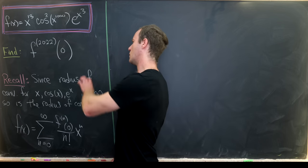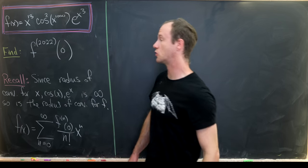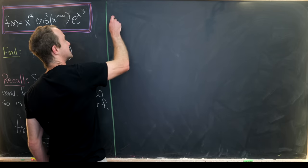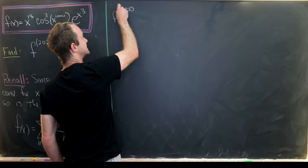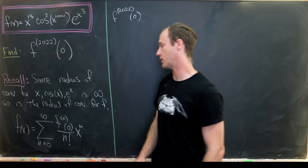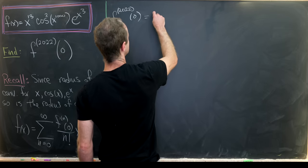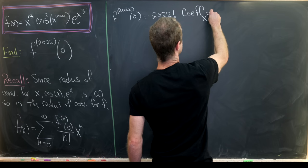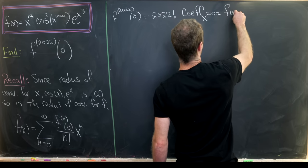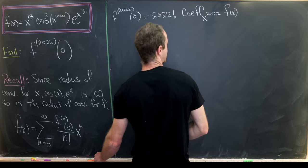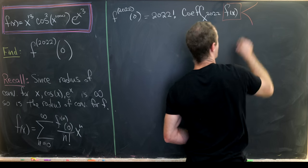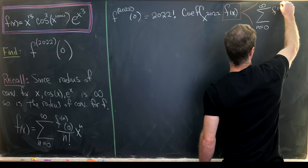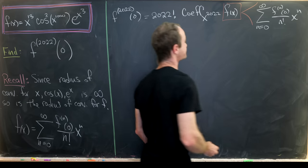Okay, so now we can recast this goal as just finding a certain coefficient of this power series. So notice that the 2022nd derivative of our function evaluated at zero is exactly equal to 2022 factorial times the coefficient of x to the 2022 of our function f of x. Where when I'm writing this function f of x right here, what I'm really doing is viewing it as its power series expansion. So this is the sum as n goes from zero to infinity of that nth derivative evaluated at zero over n factorial x to the n.